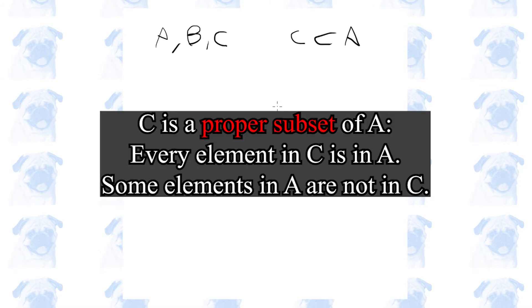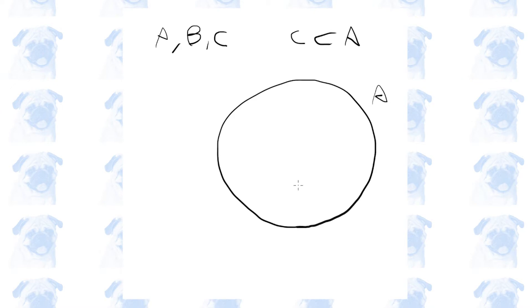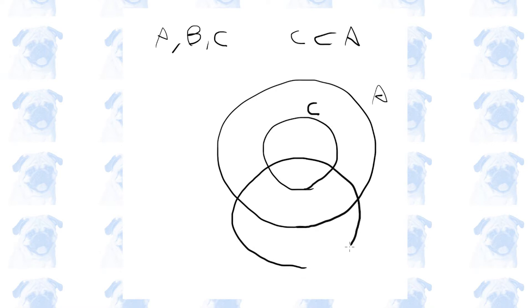We are given that there are three sets, A, B, and C, and C is a proper subset of A. Every element in C is also contained in A, but there are some elements in A that are not included in C. We can express this relationship using a Venn diagram. So here's our A, C is contained inside A like this, and here's set B.